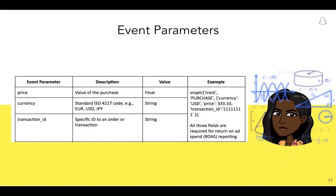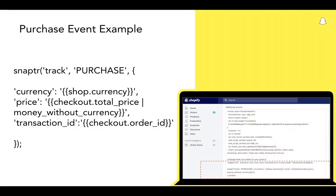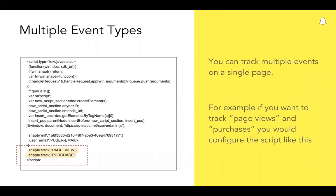They are all listed in detail in the Business Help Center article. To review a purchase event example on the Shopify platform, the currency is stored in a variable called shop.currency, price is stored in a variable called checkout.totalprice, and the transaction ID is stored in checkout.orderID. So firing the purchase event with all the required parameters will look like the example pictured on the slide. You can also track multiple events on a single page. For example, if you want to track page views and purchases on the same page, you would configure the script like the example on the left, where the pixel is initialized once and then both events are fired individually after that.